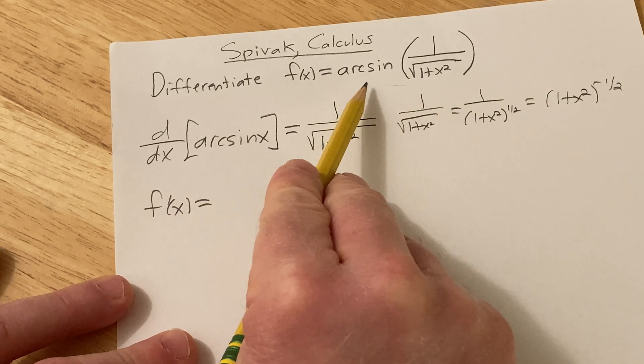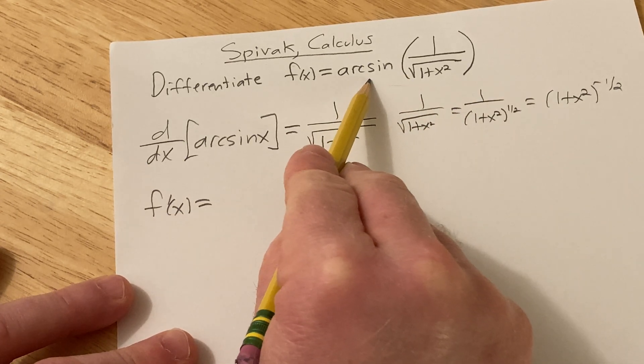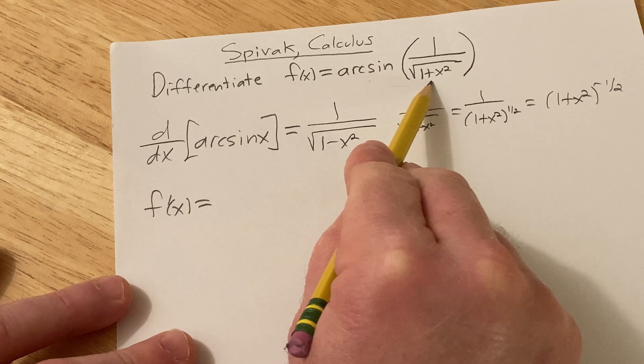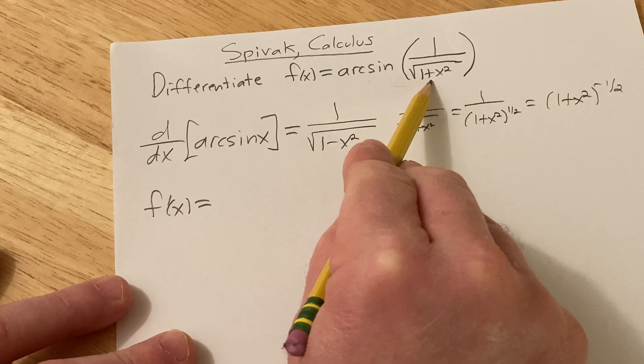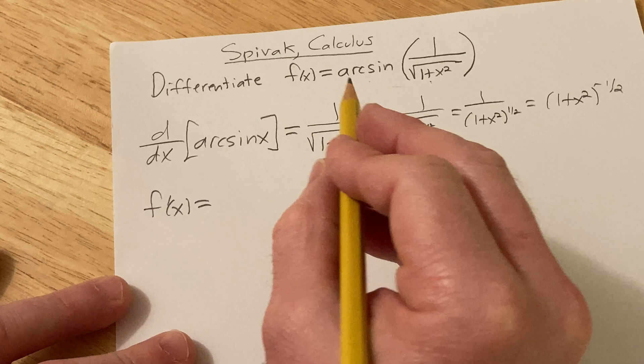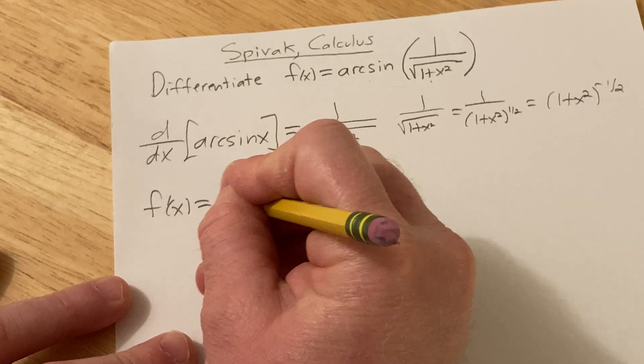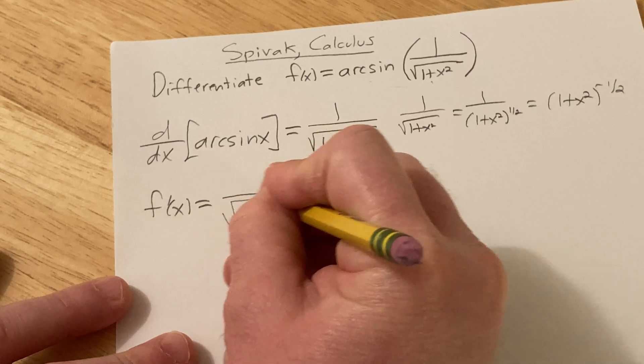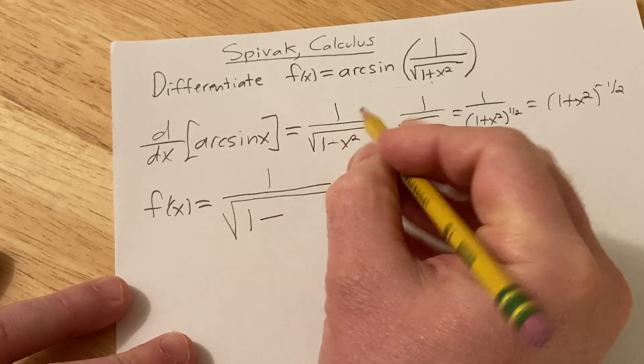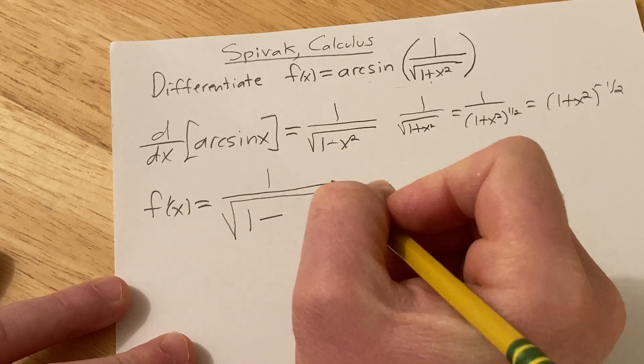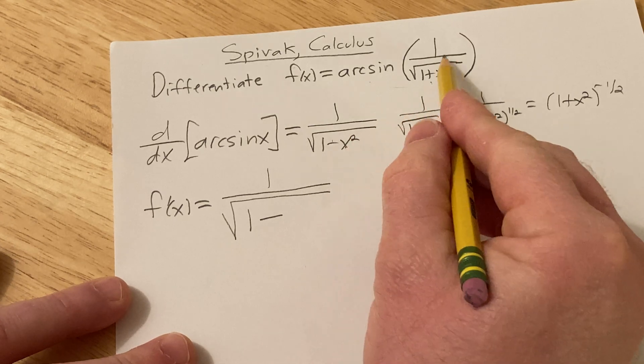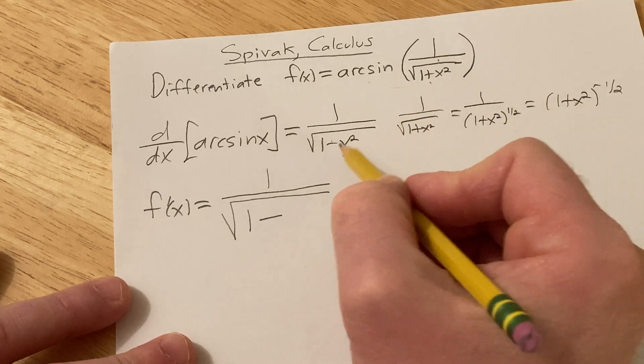So we're going to have to use the chain rule. We're going to take the derivative of the outside and we're going to leave the inside untouched. And then we're going to multiply by the derivative of the inside. So we're going to use this formula. So it's 1 over square root 1 minus, and then we're going to square the inside piece. So we can either plug this in or we can plug this in because they're both the same.